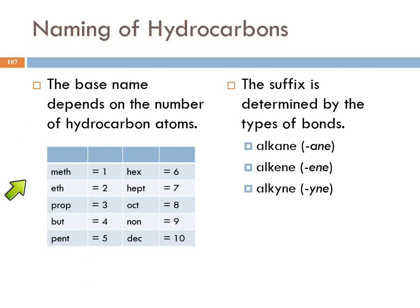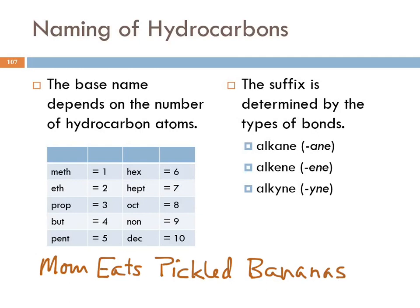So base name depends on number of carbon atoms. Ignore the first four. Pent, hex, hept, oct, non, dec. Those should look familiar. Those are similar to the prefixes we used for the molecular compounds, right? The first four are different. I'm sorry about that. It's history, really. So how do you remember that meth is one, eth is two, prop is three, and but is four? This is how I remember it. Mom eats pickled bananas. Could you even pickle a banana? I don't know. Mom must be pregnant. Pickled bananas. Just to get the order, meth, eth, prop, but. So meth is one, et cetera. And then the suffix, ane, ene, or yne.